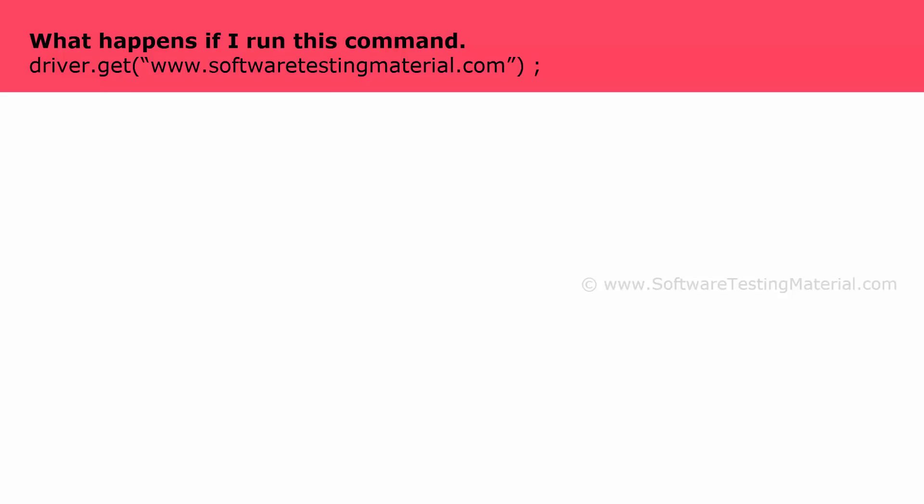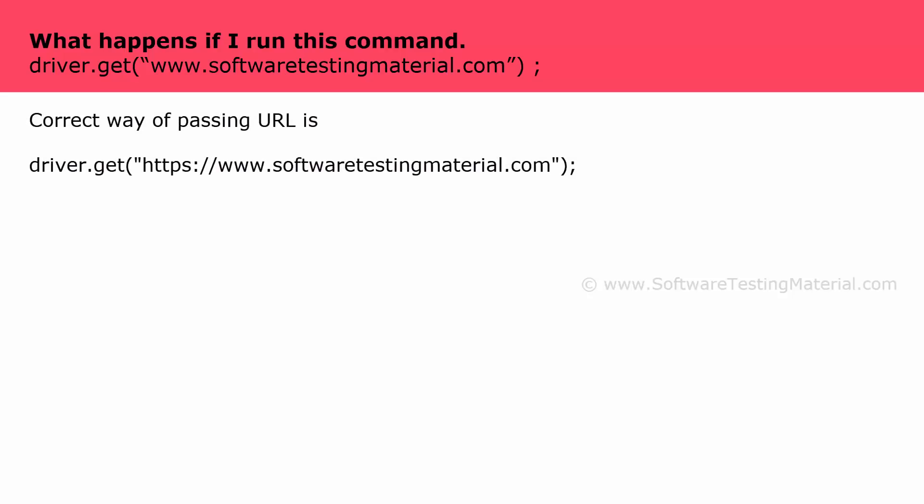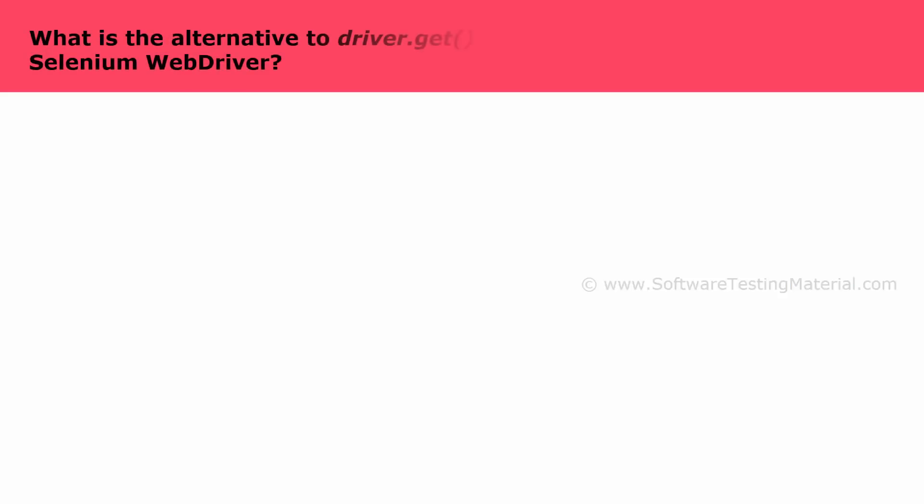What happens if you run driver.get("www.softwaretestingmaterial.com")? An exception is thrown. You need to pass the HTTP protocol within driver.get(). To avoid the exception, pass the URL as: driver.get("https://www.softwaretestingmaterial.com"). What is the alternative to driver.get() to open a URL using Selenium WebDriver? The alternative method to driver.get() is driver.navigate().to().